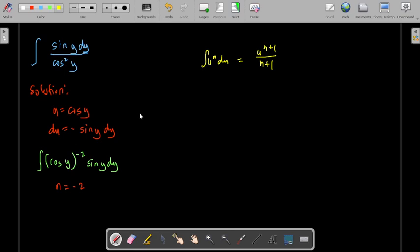negative sine y dy. Now for this instance we don't have any negative, so with that we just add a negative